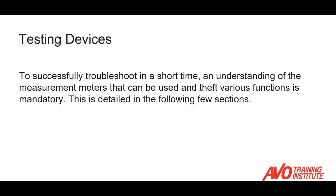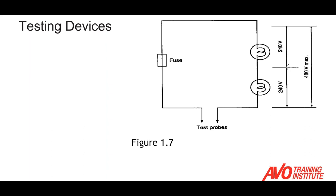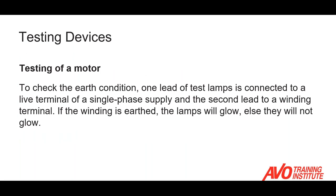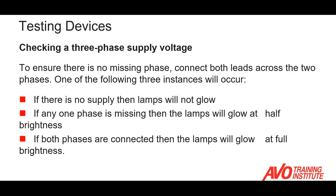To successfully troubleshoot in a short time, you need to understand the measurement meters, different test equipment, and how they can be used. Here we have a lamp indicator — we're using these lamps to check a live circuit; it is fused. If we have a continuous path and a live circuit, the lamps will illuminate. We can use a lamp indicator for several different applications — most commonly, to detect the presence of live voltage. When testing a motor and checking for an earth condition, those lamps can be connected to a winding with a single-phase supply. If the winding is earthed, the lamps will glow; if there's not a path to ground, you won't get any illumination.